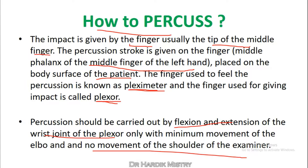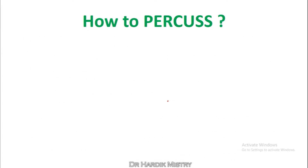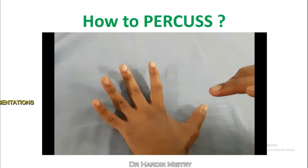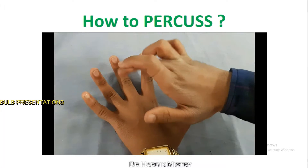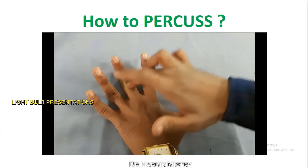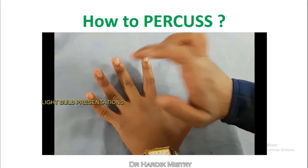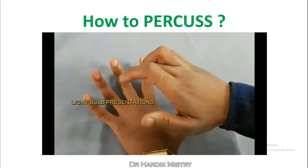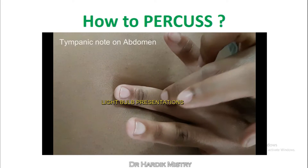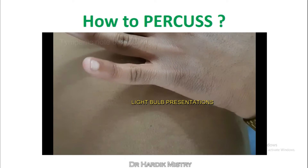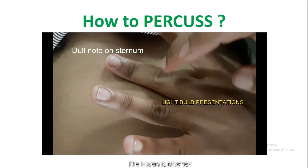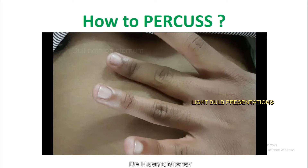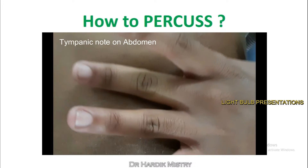You only have to perform the percussion movement using the wrist joint only. The finger placed over the body surface is known as the fleximeter, and the finger via which you are making an impact over the middle phalanx is known as the plexor. This is how you have to percuss.